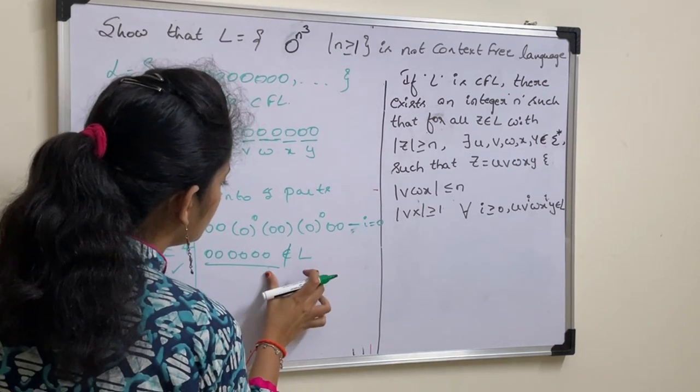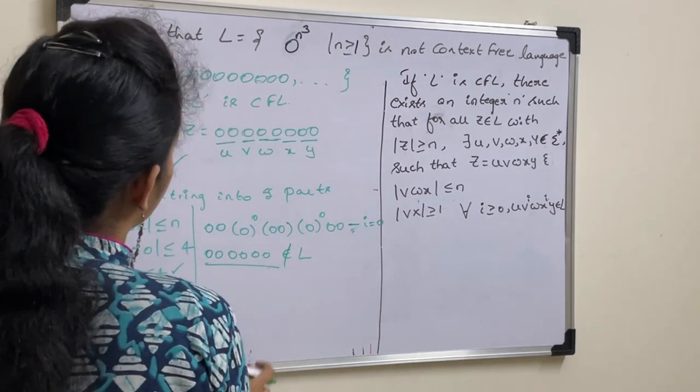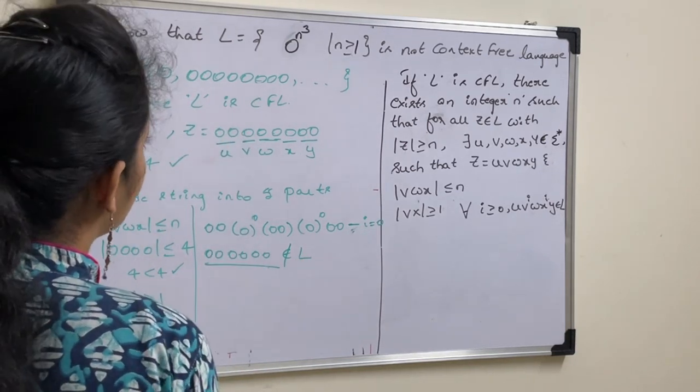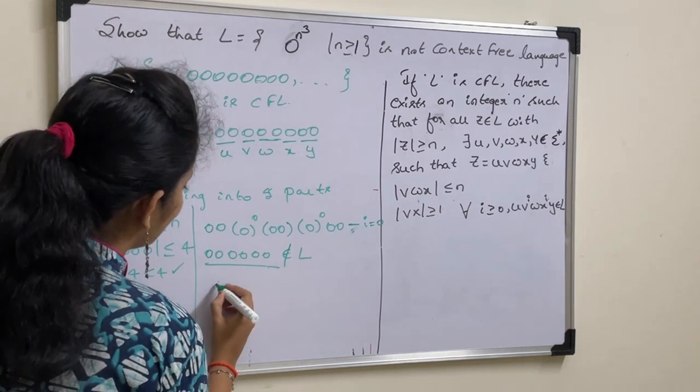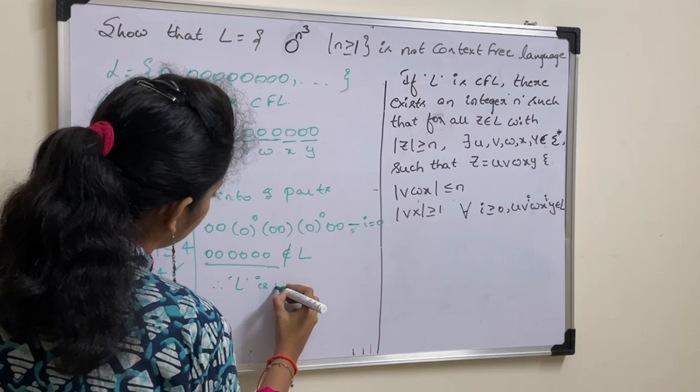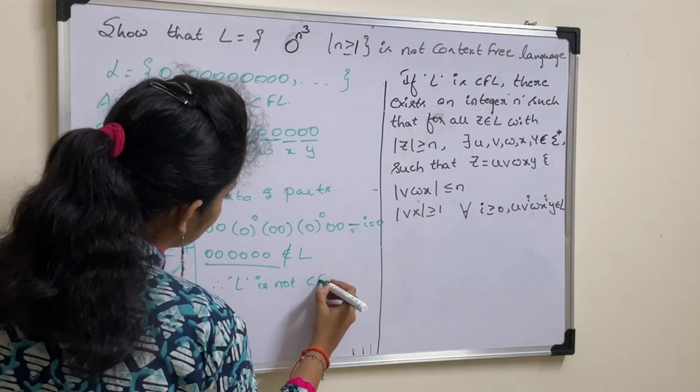As it does not belong to given language, we prove contradiction. Because initially we assume that this given language is a context free language. As we prove contradiction, we can say that L is not a context free language.